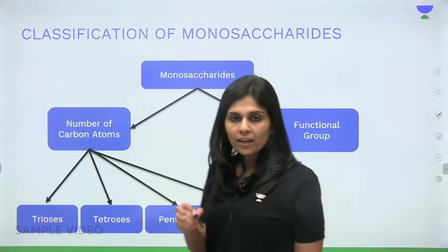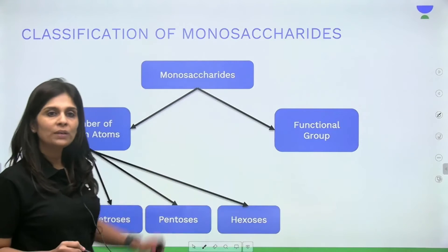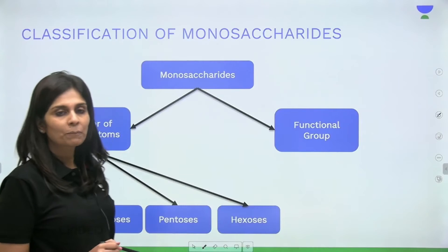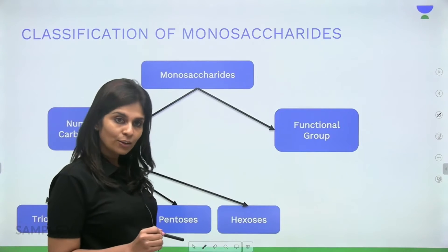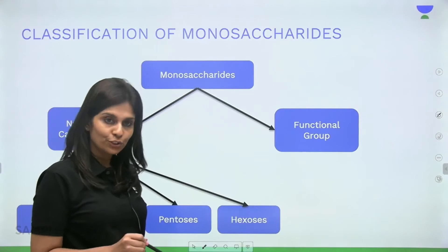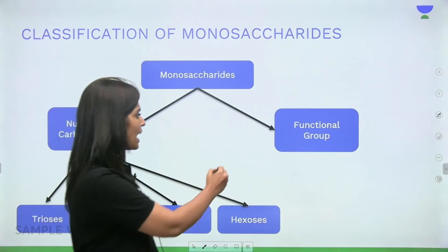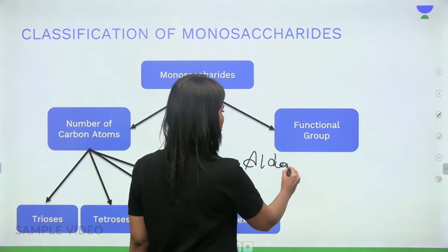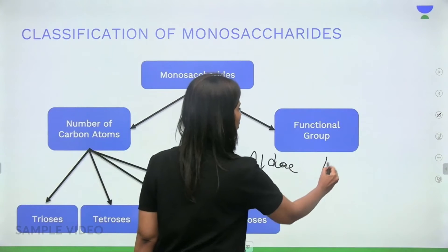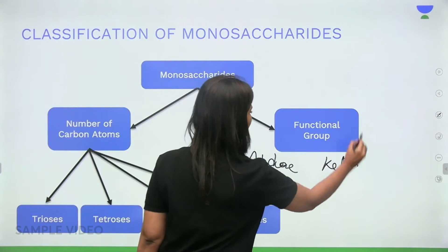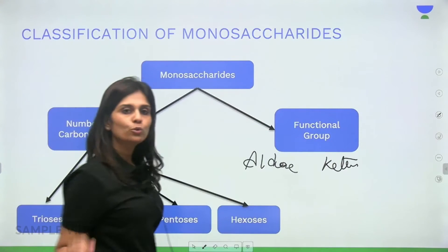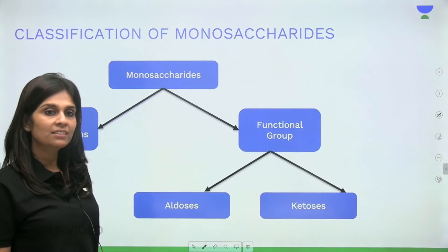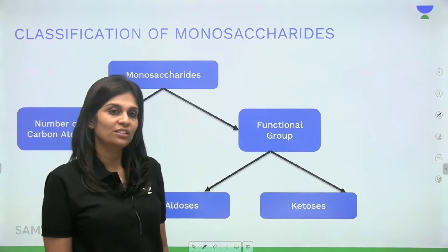Depending on the functional group: if there is an aldehyde group as the functional group, you call it an aldose. If it's a ketone group, you call it a ketose. So the two types based on functional group are aldoses and ketoses.